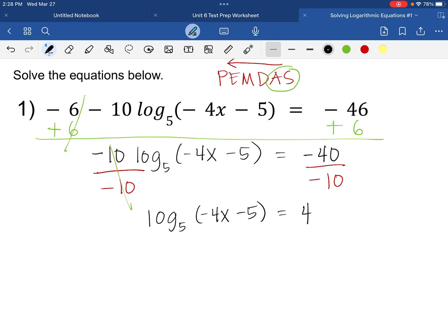So we can get rid of log by changing this equation into exponential form. So we will have our base 5, base 5 to the power 4.